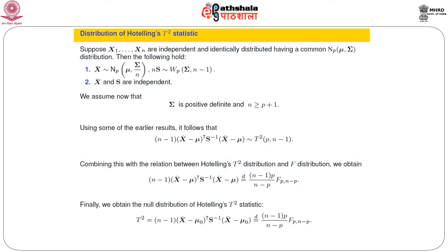Using the earlier results, it follows that the object (n − 1)(X-bar − μ)' S⁻¹ (X-bar − μ) has a Hotelling T-square distribution with parameters p and n − 1. The calculation is very simple — I leave it to the students; they can certainly work it out without any difficulty.